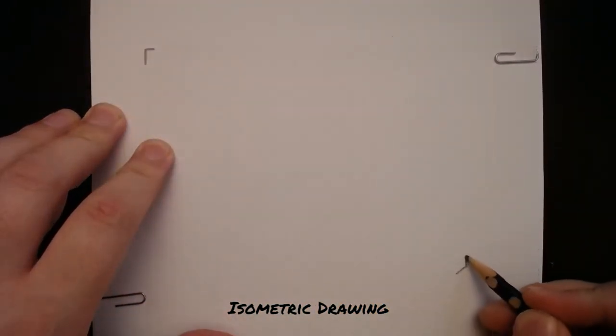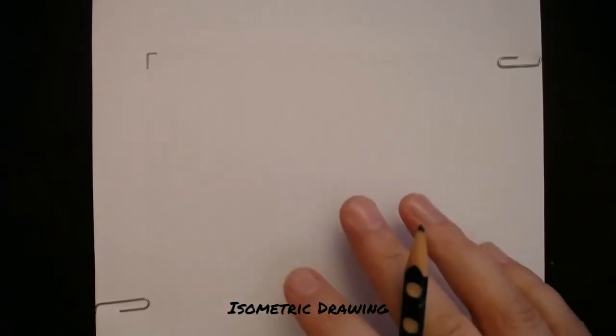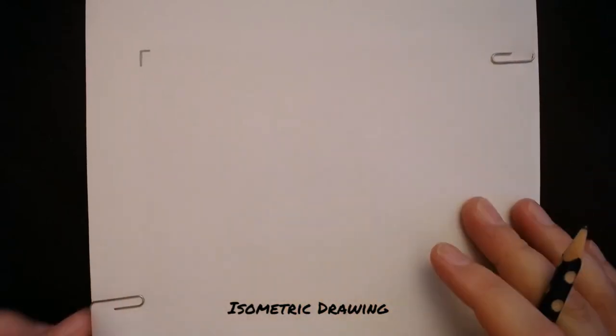This way we can produce a drawing on the plain piece of paper, remove the paper clips, and use the isometric grid over and over again.